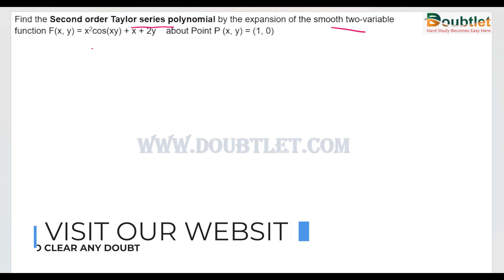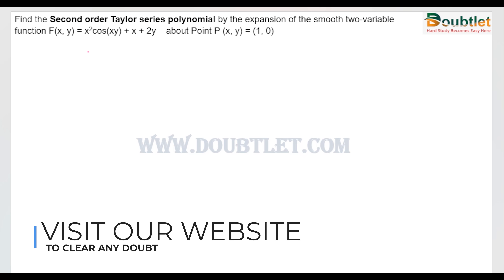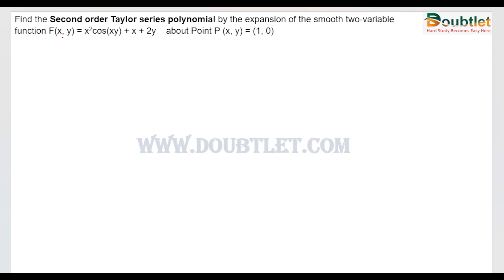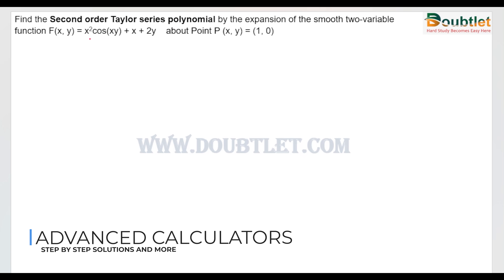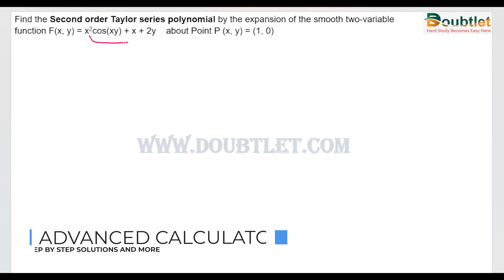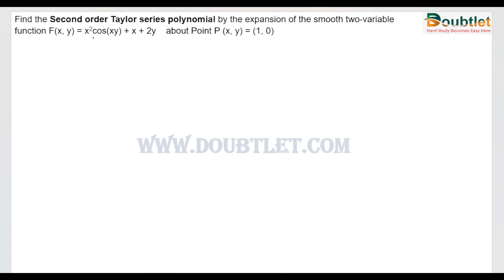Till now we have learned about finding the Taylor series of a single variable. Here there are two variables, x and y, and this is the function representing two variables. We will learn how to find the second-order Taylor series approximation about a given point. First, we will write the formula for the Taylor series approximation of a two-variable function.